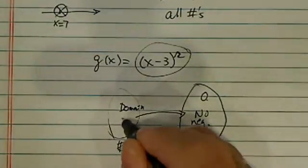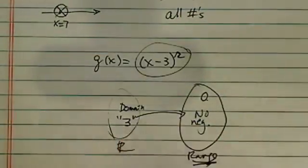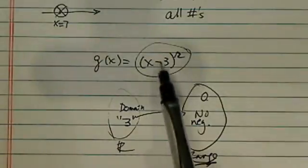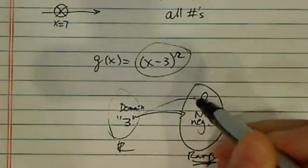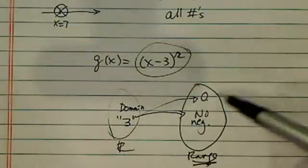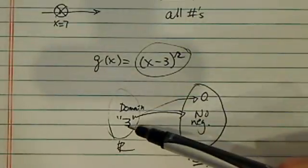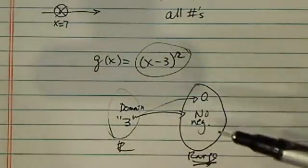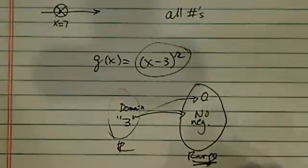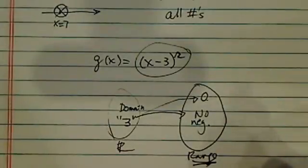Because if you have a positive 3 in the domain, 3 minus 3, square that, you will have this number equal to 0. You'll put the 0 on the shelf if you have a 3 inside, inside of the house. So for the range, it's all non-negative numbers.